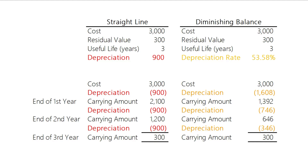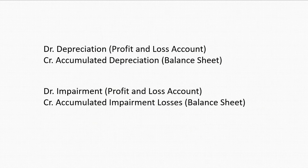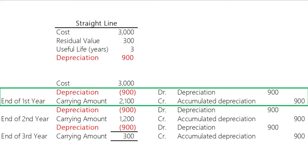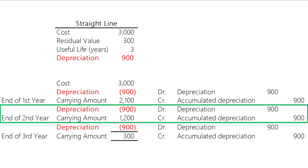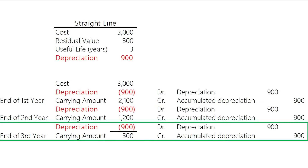The double entries for both depreciation and impairment loss are very similar — both debit the profit and loss account and credit the balance sheet. To record depreciation under the straight-line method, we debit depreciation, which is a profit and loss account item, and credit accumulated depreciation, which is a balance sheet item. Since it is the straight-line method, we use the same amount of depreciation every year.